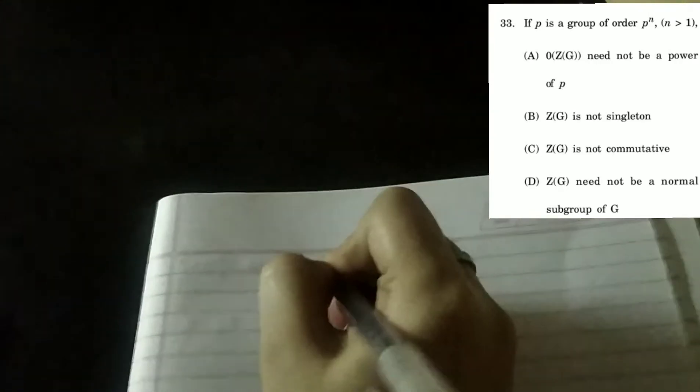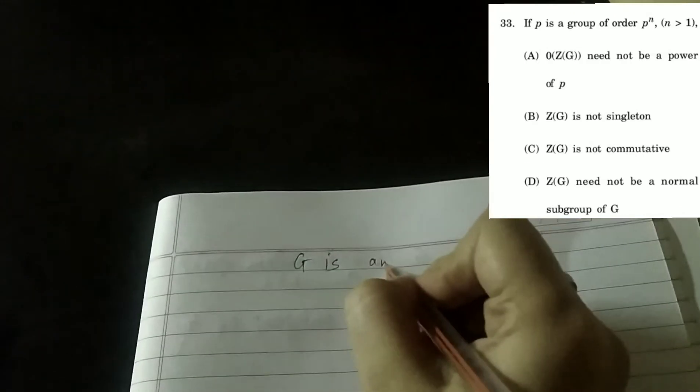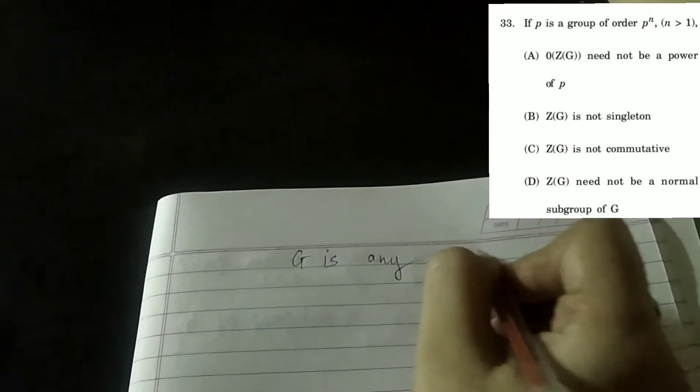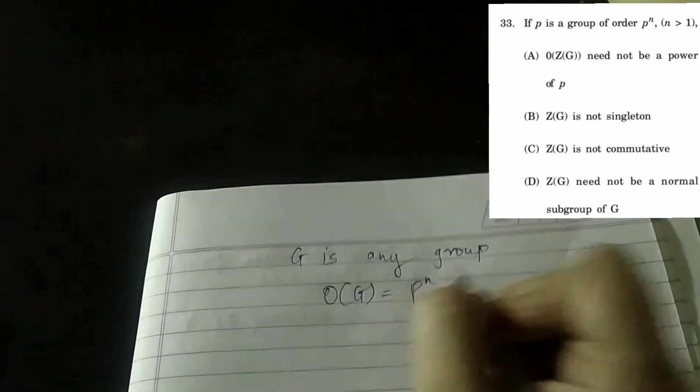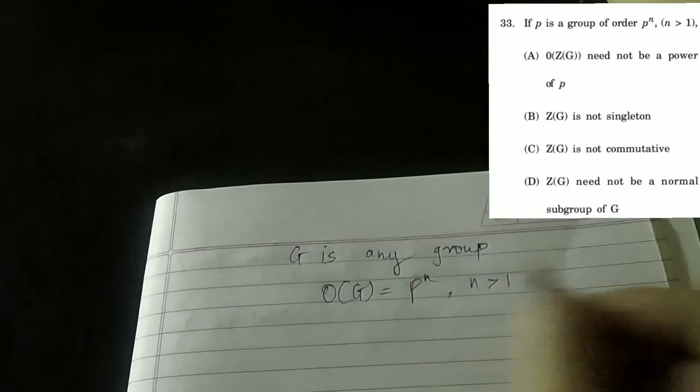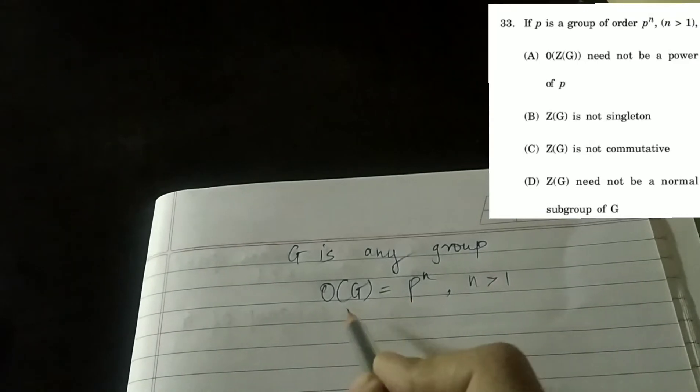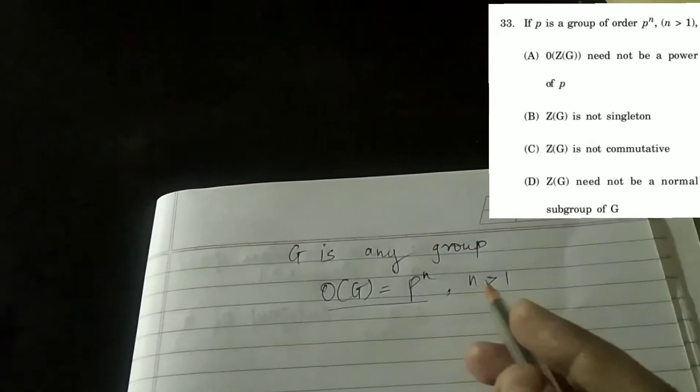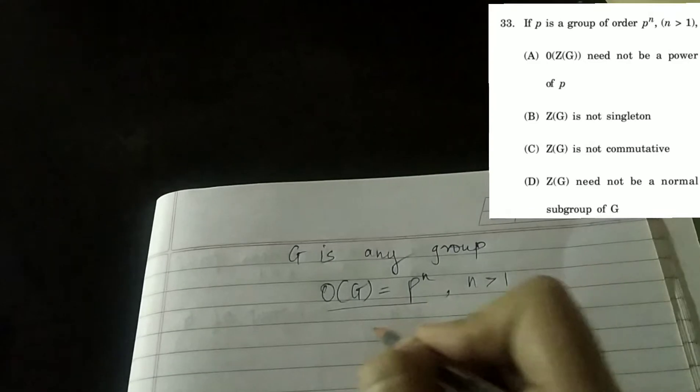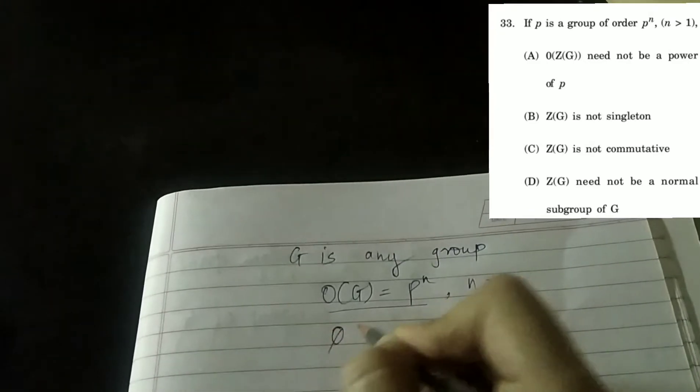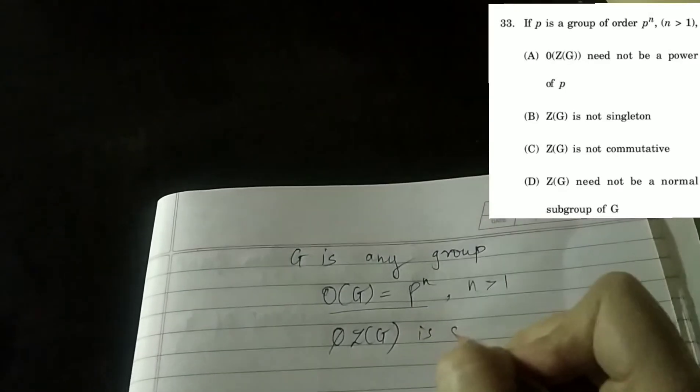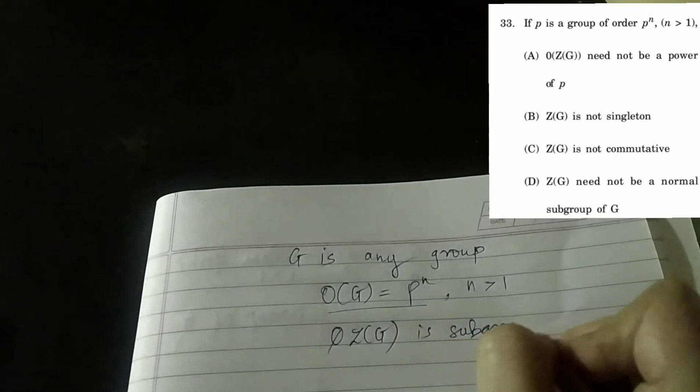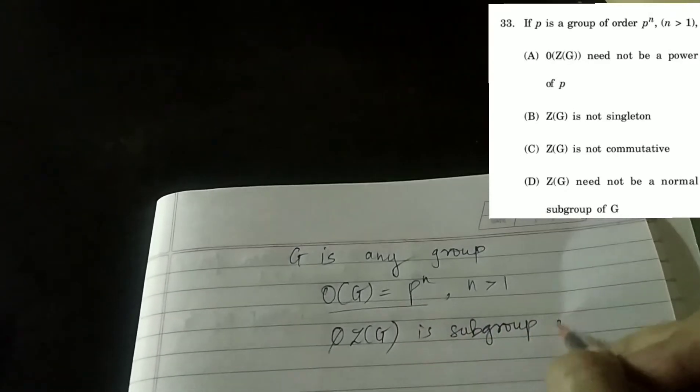We have G is any group and order of this G is p raised to n where n is any natural number greater than 1. That means this G is p-group and we know that this Z(G), which is center of group, is always subgroup of G. We have this theorem: Z(G) subgroup of G.